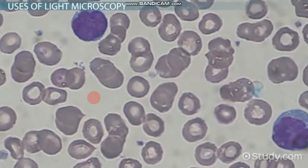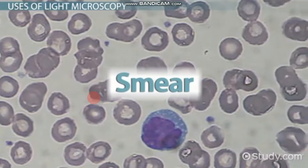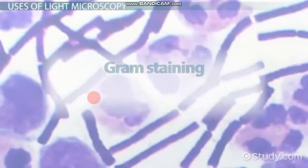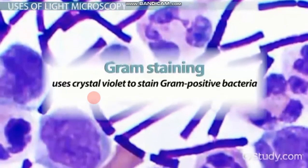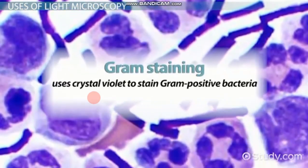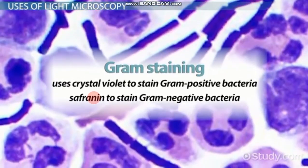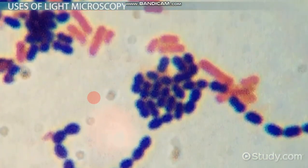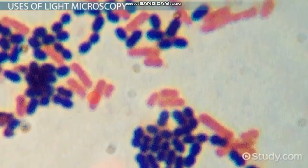Staining involves adding special dyes to a smear of cells. These stains are diagnostic for different kinds of cell membranes. Gram staining, for instance, uses crystal violet to stain gram-positive bacteria and saffron to stain gram-negative bacteria. These will show up in the light microscope as purple gram-positive cells and pink gram-negative cells.